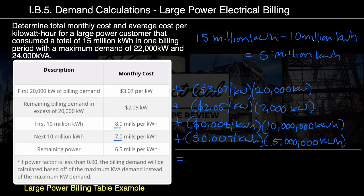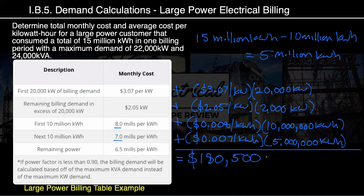Now it's time to find our total power cost. From left to right, top to bottom in the calculator: $3.07 times 20,000 plus $2.05 times 2,000 plus $0.008 times 10,000,000 plus $0.007 times 5,000,000. I hit enter on my calculator and get a total charge of $180,500. That's our total monthly bill.